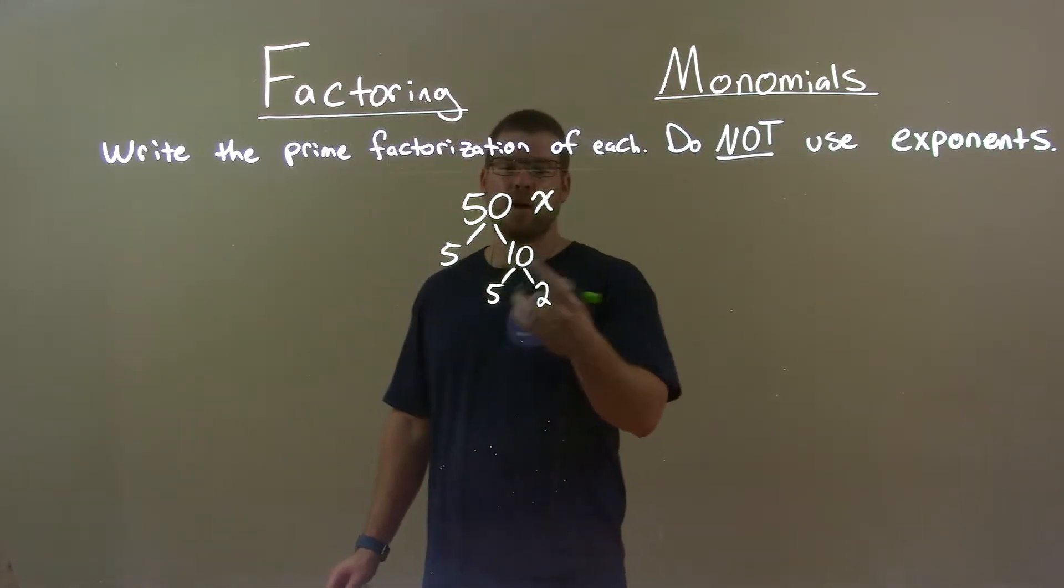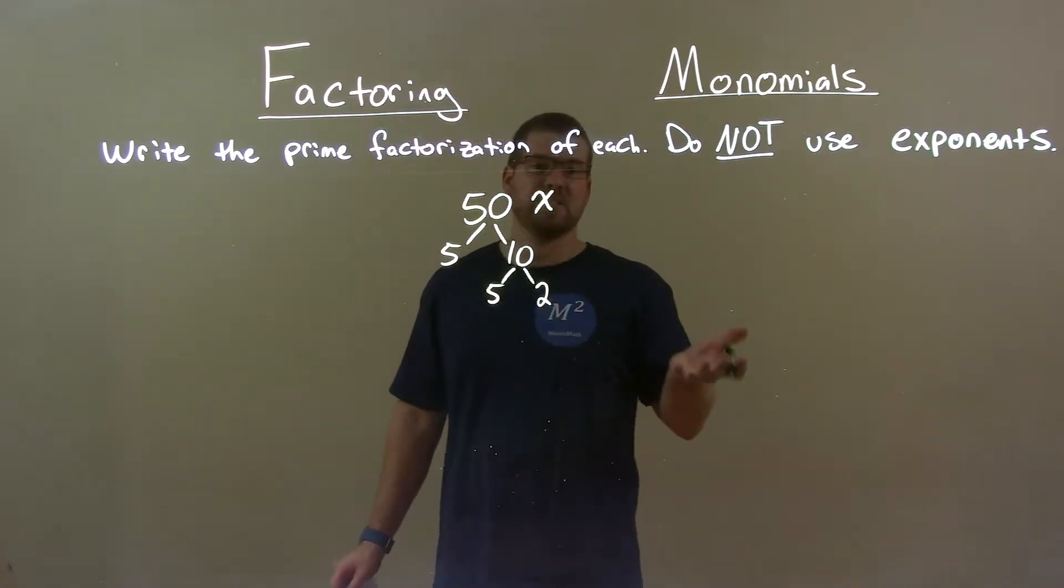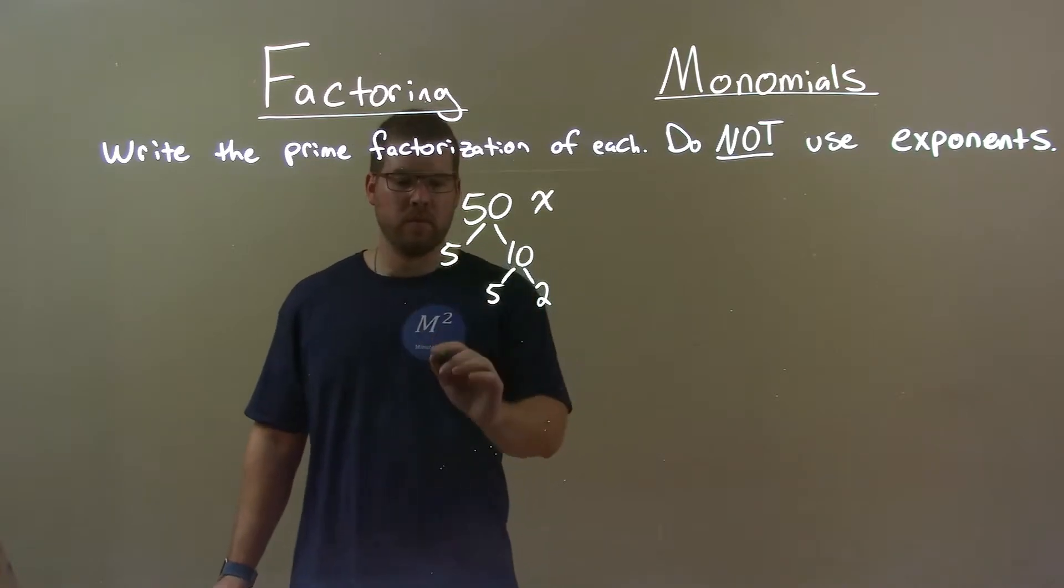So, 50, 5 times 5 times 2, x is just x. So, rearranging this from least to greatest,